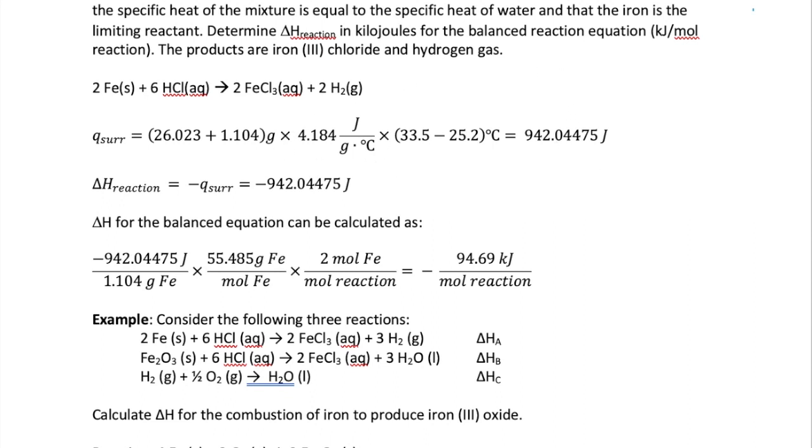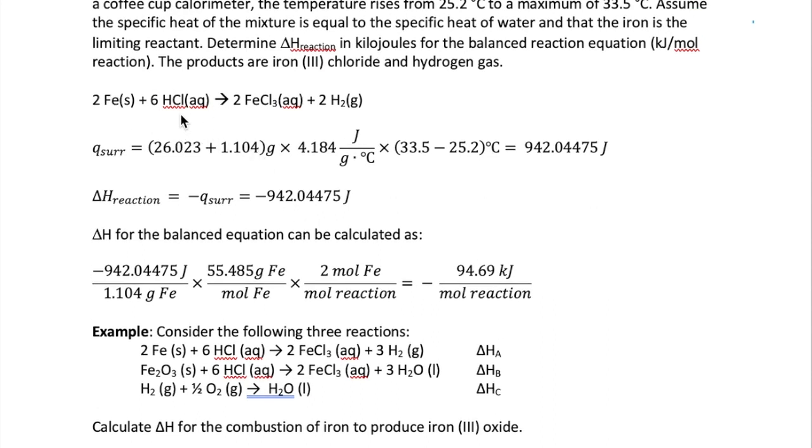Now the question is, how do we convert that to units of kilojoules per mole of reaction? You're going to have to go through several steps. First, the value that we just have is the heat generated by a certain quantity of the limiting reactant in our reaction. We were told in the question that iron is the limiting reactant. So that means that the negative 942 comes from 1.104 grams of iron. Now this can be converted to per mole of iron if we were to multiply that with the molar mass of iron. If we stop here, we will get kilojoules per mole of iron. But you see that in your balanced equation, you actually have 2 moles of iron. So to convert our unit to per mole of reaction, we're going to have to do one more step, which is multiplying what we have earlier with 2 moles of iron per mole of reaction. So our final answer ends up being negative 94.69 kilojoules per mole of reaction.